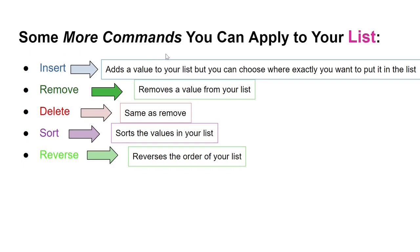Here are some more commands you can apply to your list. Insert adds a value to your list at a specific position you choose, unlike append which adds to the end. Remove deletes a value from your list by its value. Delete is an alternative way of removing a value using the 'del' keyword with an index. Sort sorts the values in a particular order. Reverse reverses the order of the list, so the last index becomes the first, and vice versa.